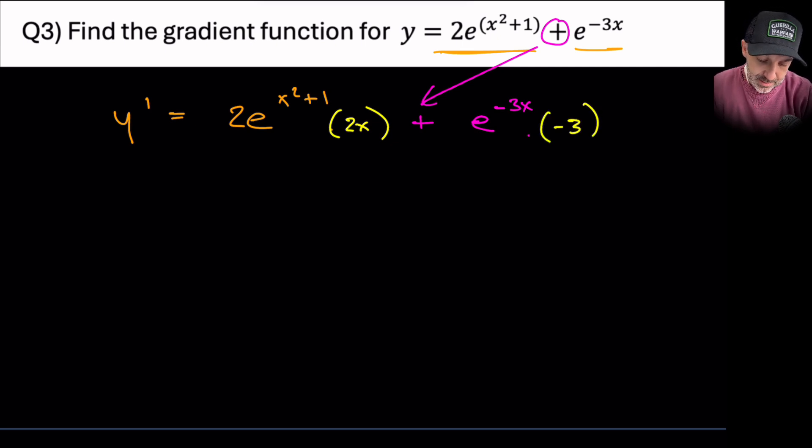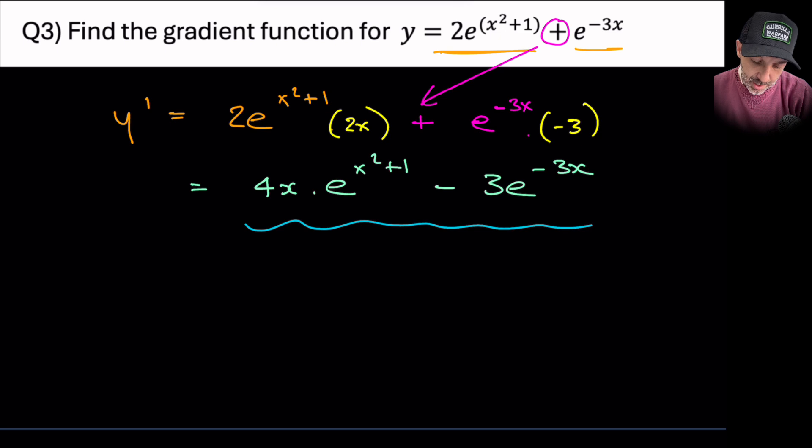So let's just tidy that up in the next line down. We have 4xe^(x^2+1) minus 3e^(-3x). It doesn't ask us to substitute a number in, so we have our result. We can't combine them because there's an x here and we don't have an x here, and that will be our last question.